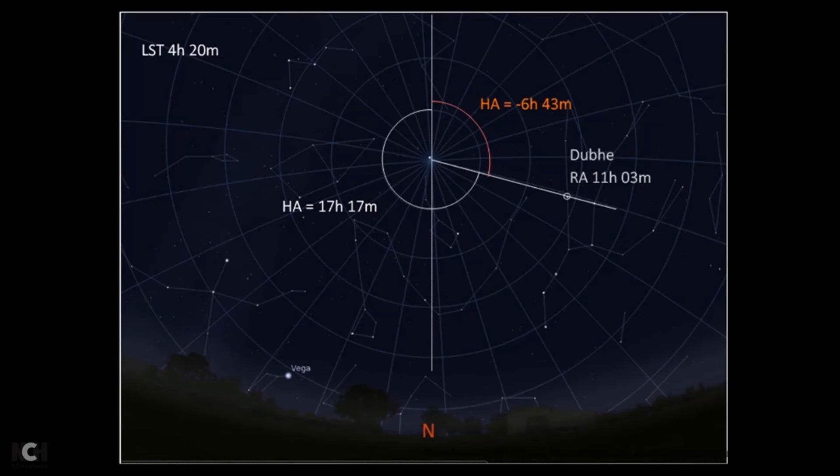Let's look at another example. On this diagram, let's look at Dubhe, and you'll see I've said that Dubhe has an hour angle of 17 hours and 17 minutes, or we can say that it has an hour angle of minus 6 hours 43 minutes.